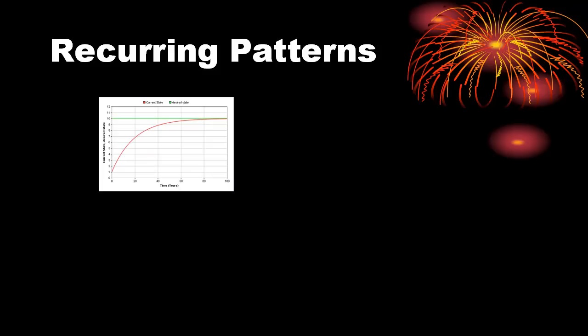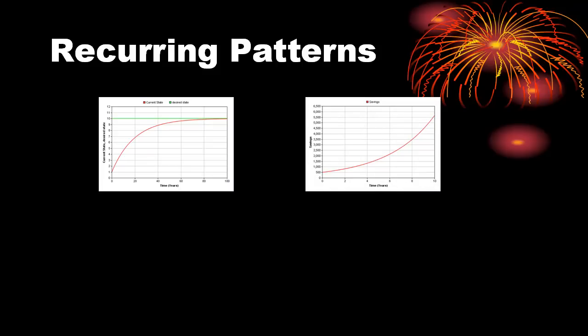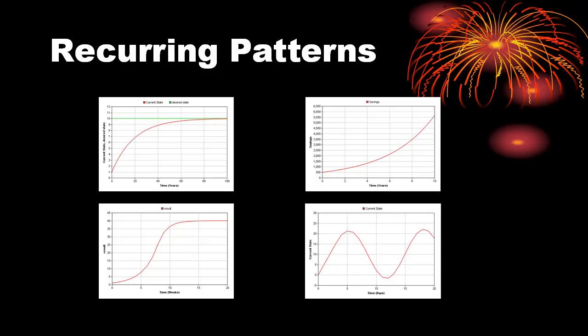Exponential growth where something grows ever faster as time passes. S-shaped growth where something grows initially exponentially and then begins to look like it is approaching a goal. And oscillations where something seems to move in one direction and then another over and over.